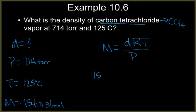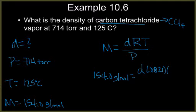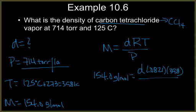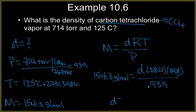M, I'm going to substitute as 154 grams per mole. D is what I'm looking for. R is 0.0821 liter atmosphere per mole Kelvin. Temperature is 125 degrees Celsius, which we're going to add 273 to get our Kelvin temperature, which is 398 Kelvin. Then I'm going to divide by the pressure. Pressure is in torr, so I have to do a little conversion here. 1 atm is 760 torr. So my pressure ends up being 0.939.